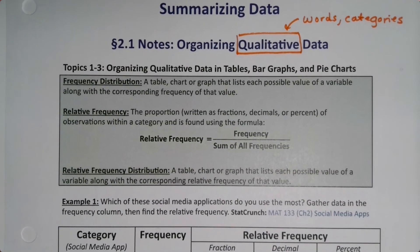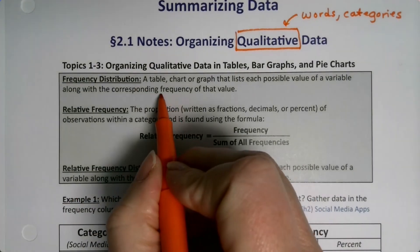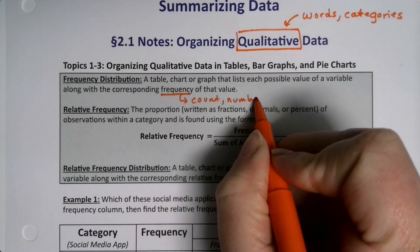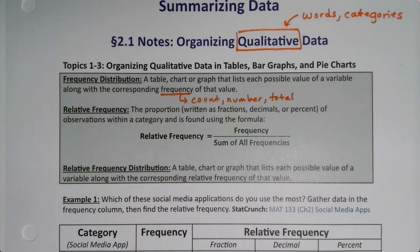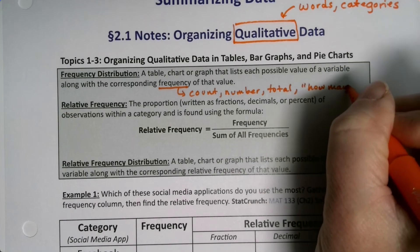All right, so the first thing we need to do is learn a definition, which is a frequency distribution. A frequency distribution is a table, chart, or graph that lists each possible value of a variable along with the corresponding frequency of that value. Now frequency has a lot of different names. Frequency is the fancy name for it, but we can also call it count or number, sometimes total depending on what we're doing. It's basically just how many. So if you're thinking how many are in this group, that's frequency.